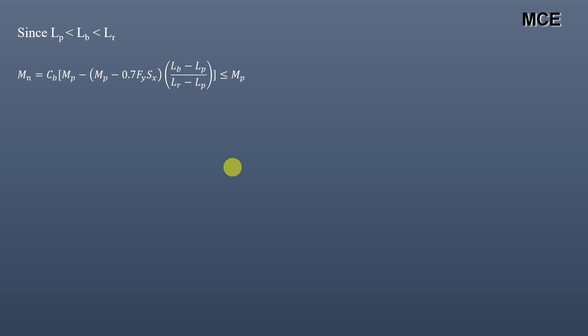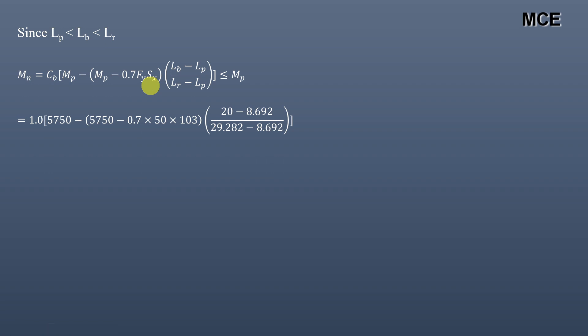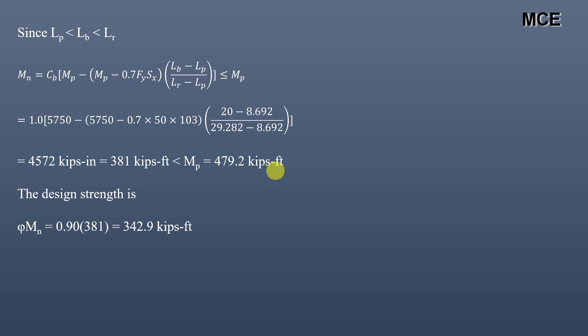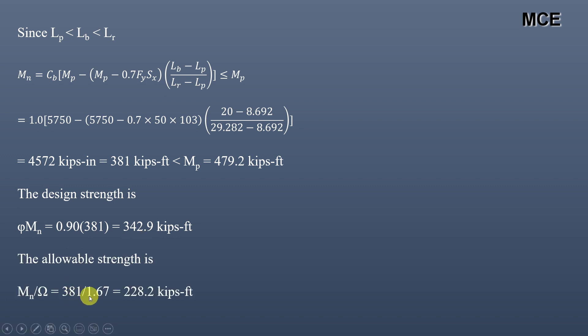Since the actual unbraced length of 20 feet is greater than LP (8.692 feet) but less than LR (29.28 feet), the nominal strength is governed by AISC equation F2-2 for inelastic lateral torsional buckling. Putting in the values, the nominal strength equals 381 kip-feet, which is less than the full plastic moment capacity of 479.2 kip-feet. The LRFD design strength is 0.9 × 381 = 342.9 kip-feet, and the ASD allowable strength is 381 / 1.67 = 228.2 kip-feet.